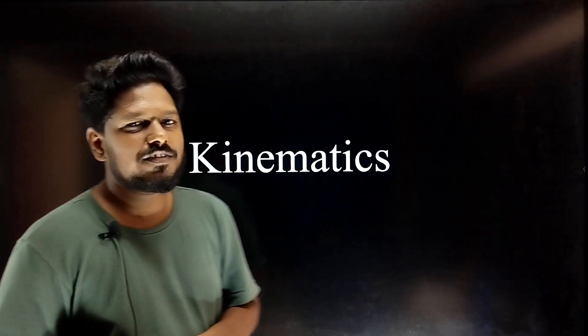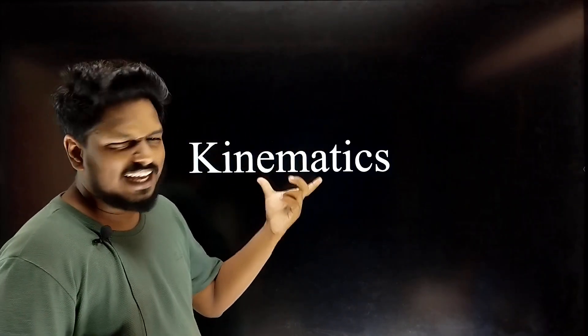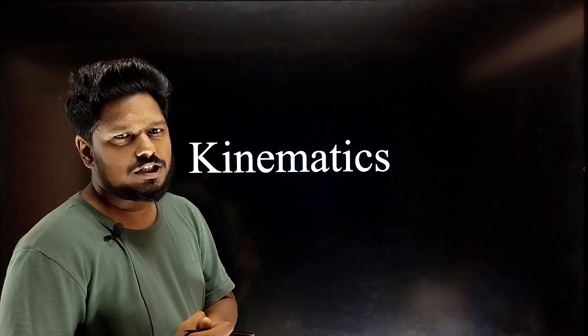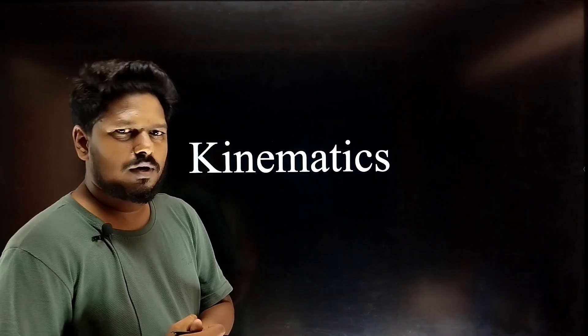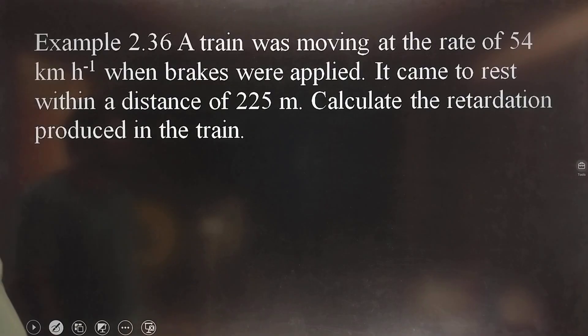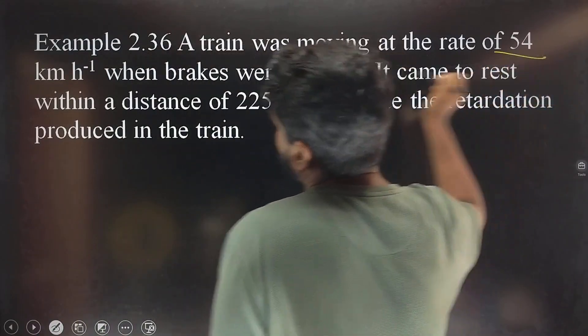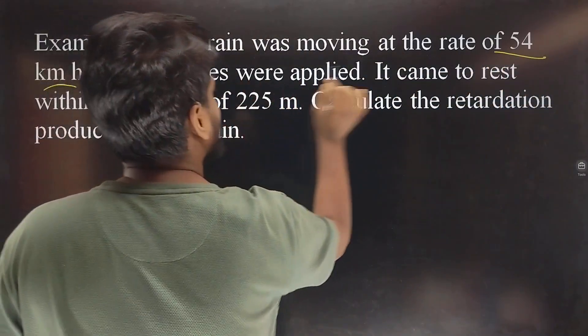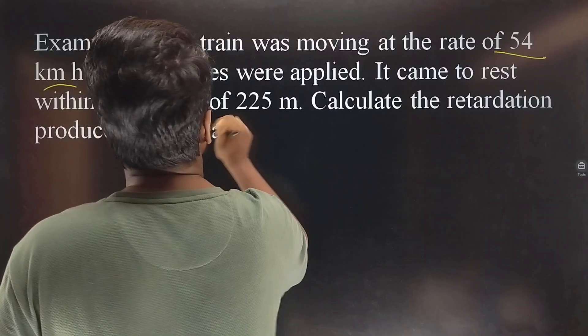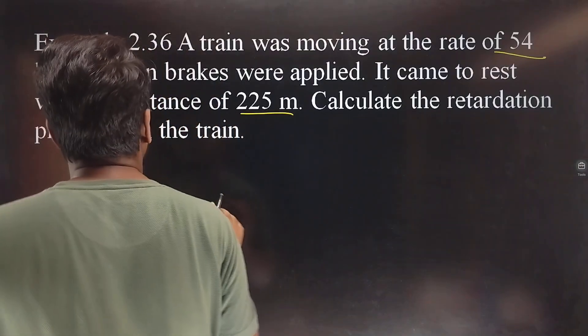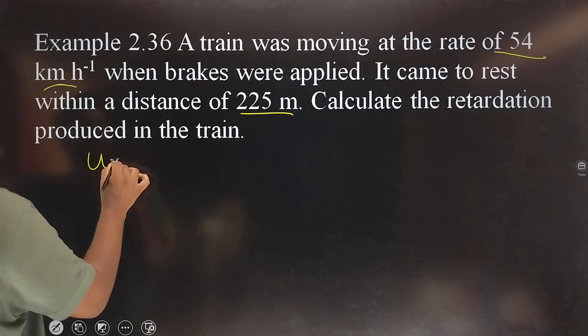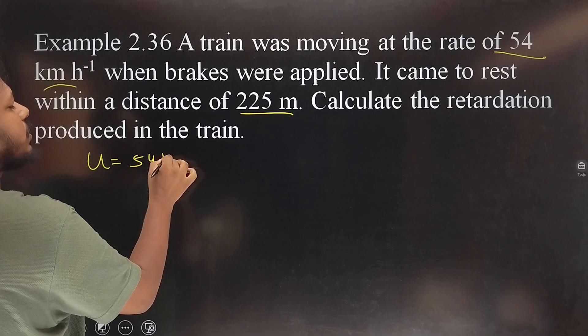Hello everyone, in the video in the state board book and kinematics lesson, let's talk about these questions. Example 2.36: A train was moving at the rate of 54 km per hour when brakes were applied. It came to rest within a distance of 225 meters. Calculate the retardation produced in the train.